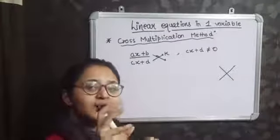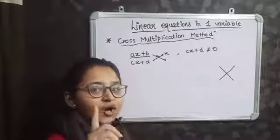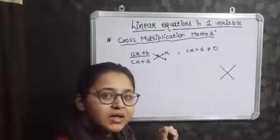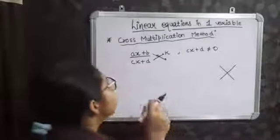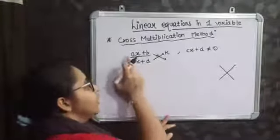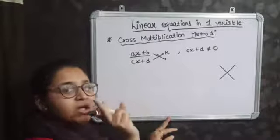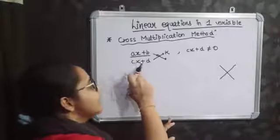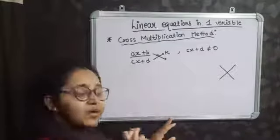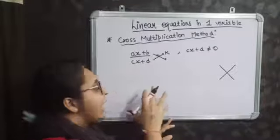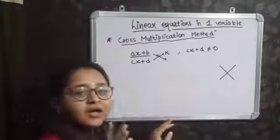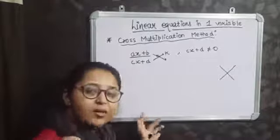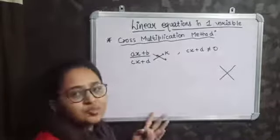Now we are applying the cross multiplication method for our linear equations. The general form for cross multiplication method must have a linear equation in one variable in the numerator, similarly a linear equation in one variable in the denominator, and on the right hand side there must be only a constant term — no variable term must be there.